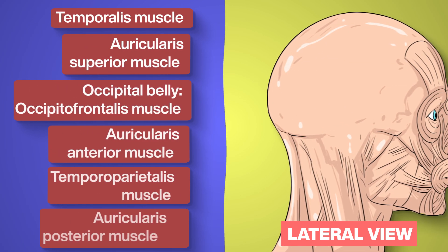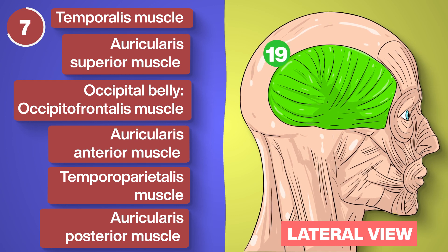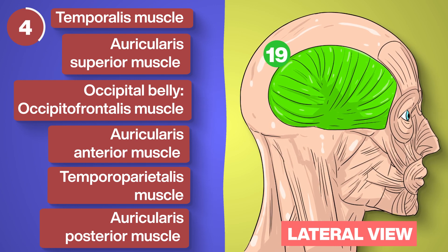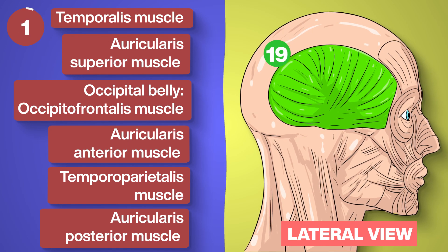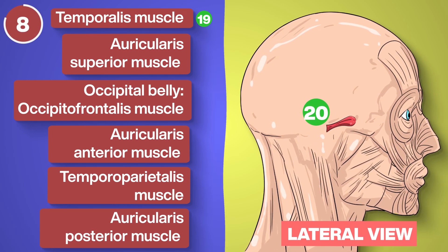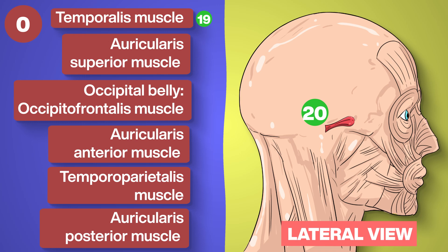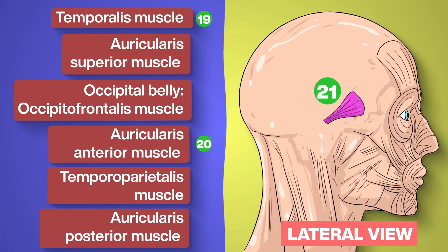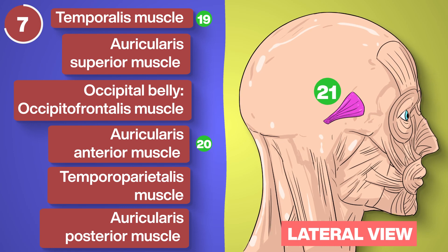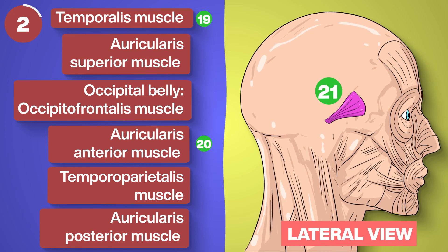Muscles of the face — lateral view. Number 19: Temporalis muscle. Number 20: Auricularis anterior muscle. Number 21: Temporoparietalis muscle.